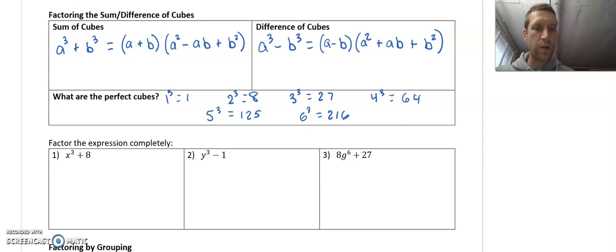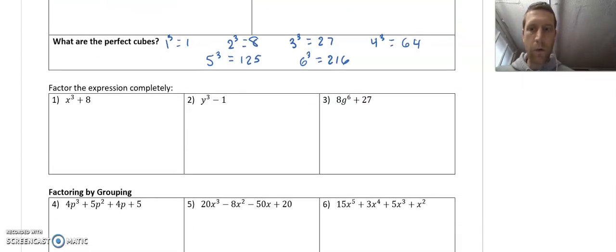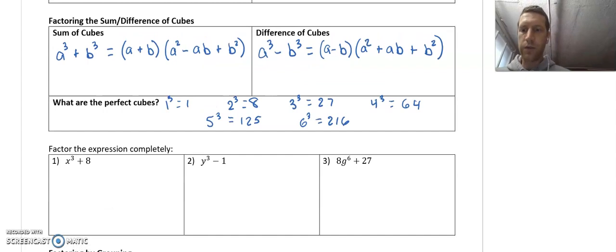So here's how this works. For this first one, I have two perfect cubes, right? X to the third is a perfect cube, and 8 is a perfect cube. By the way, if you have a variable with an exponent that's a factor of 3, so like 3, 6, 9, 12, those are all perfect cubes. So the first thing I want to do, we'll notice this is a plus sign, so this is a sum of cubes, so I'm going to use my first formula up here.